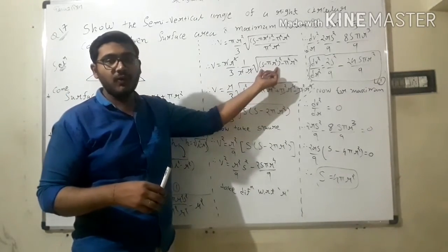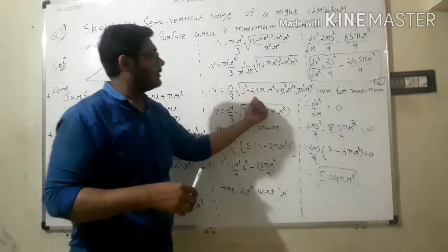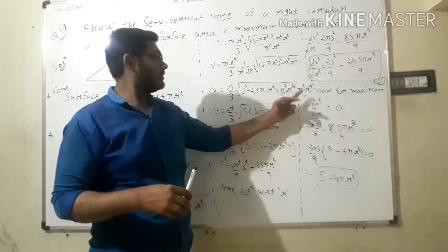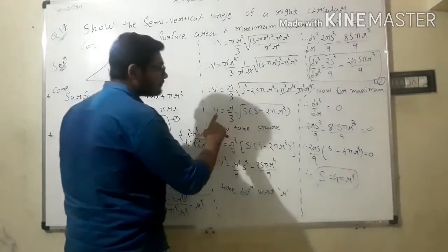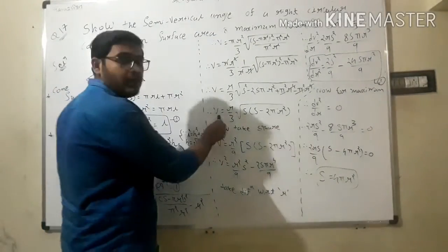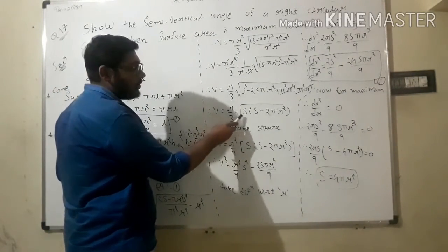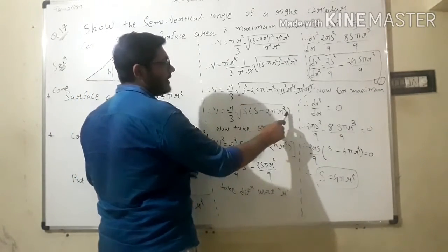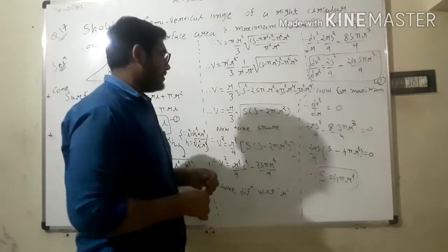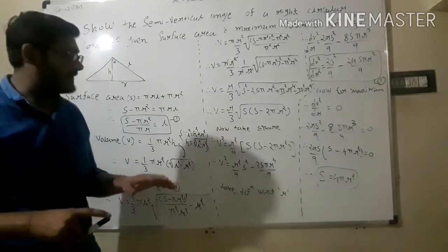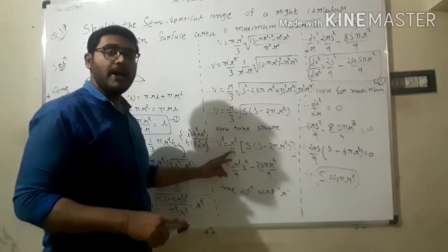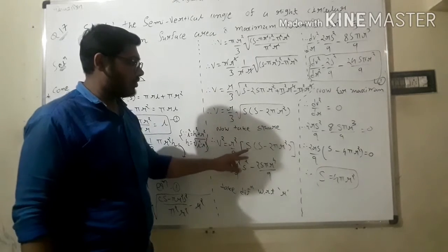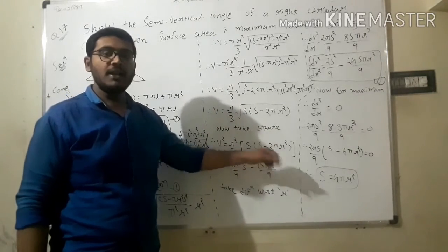Applying the difference of squares formula and cancelling terms, we arrive at V = (r/3) · √(S - 2πr²). Now squaring both sides: V² = r²/9 · S · (S - 2πr²). Expanding the bracket: V² = Sr²/9 · (S - 2πr²) = S²r²/9 - 2Sπr⁴/9.